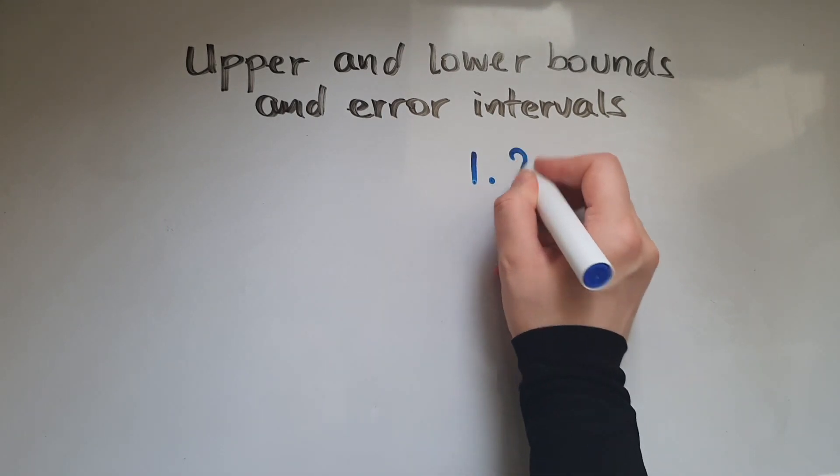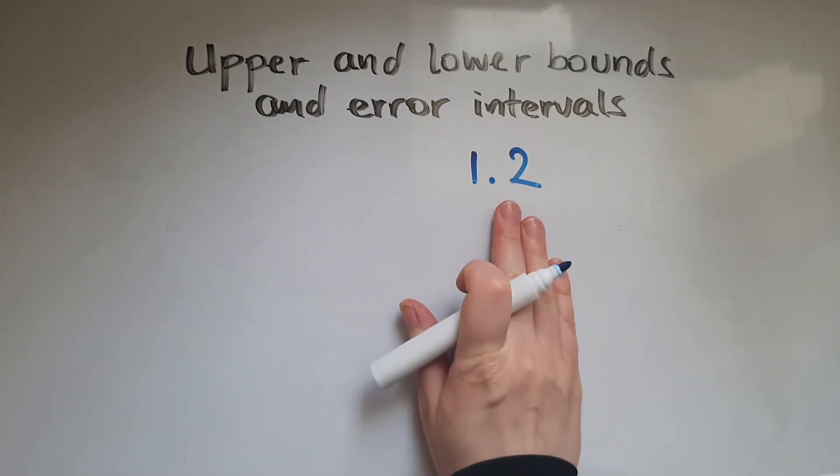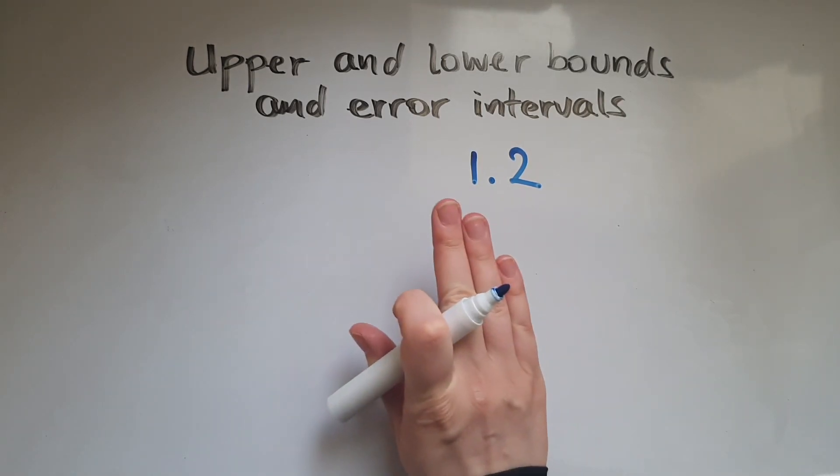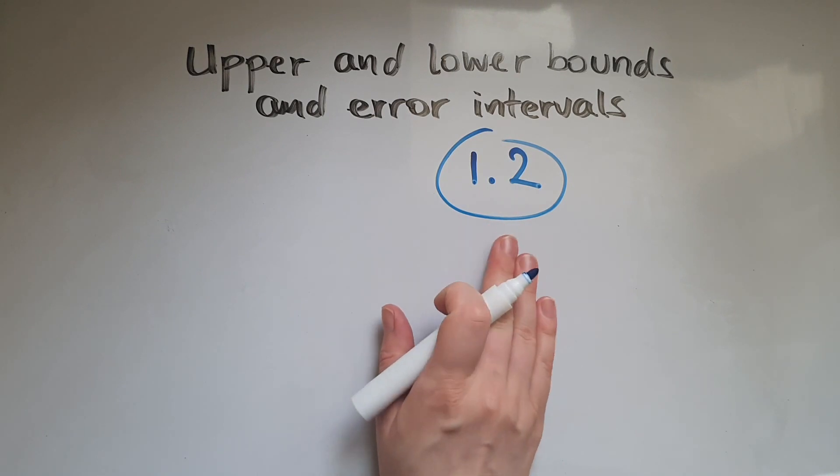1.2 rounded to one decimal place. So this is what it's been rounded to. What values would round to this?